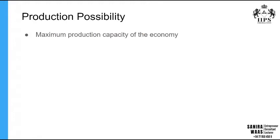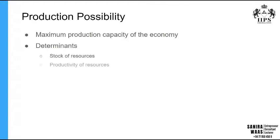Starting with the definition: production possibility is identified as the maximum production capacity of the economy. This production possibility is determined by two main important things. The first one is the stock of resources — the stock of resources of an economy will determine its production capacity. The other one is the productivity of the resources. Even if you have a lot of resources, low productivity will hinder the production capacity of the economy.